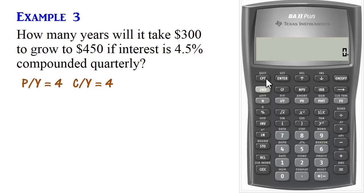Second Quit. So the interest rate is 4.5%. So we have 4.5 I/Y. The present value is 300. So 300. But this time we have to make sure we make one of present value or future value negative. So we make the present value negative.